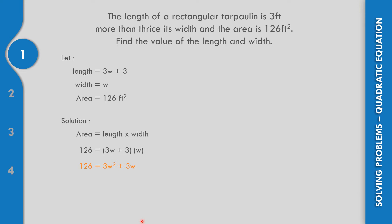If we write it in standard form, moving everything to one side, we get 0 equals 3W squared plus 3W minus 126. Or equivalently, 3W squared plus 3W minus 126 equals 0.